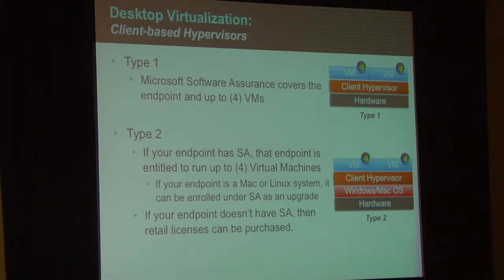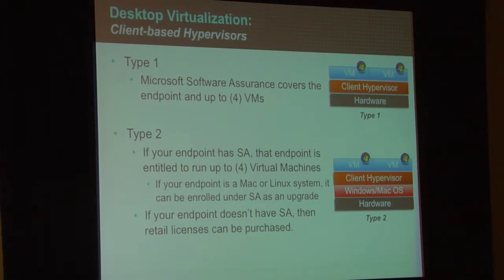Type 2 is what most of us are doing — running virtual machines sitting on a hypervisor somewhere. If your endpoint has SA, you're good to go. If not, you need to buy VDA or license plus SA. One thing that causes confusion: if you have a Mac or Linux box, it qualifies for upgrade license. Through your open licensing or enterprise agreement with Microsoft, you can actually buy licenses for your Mac and have SA on it, so technically you can connect remotely to Windows.